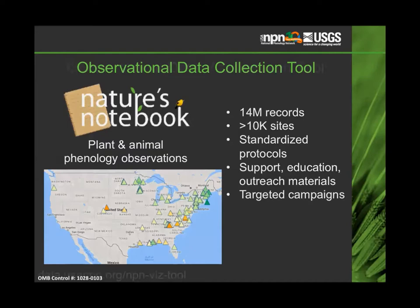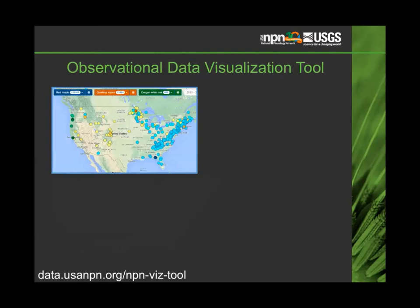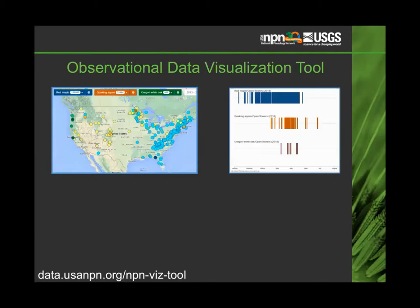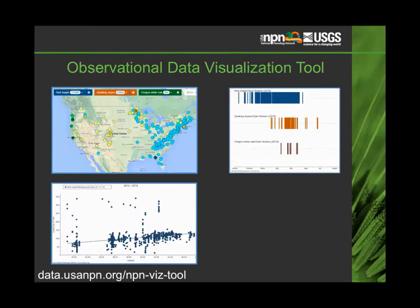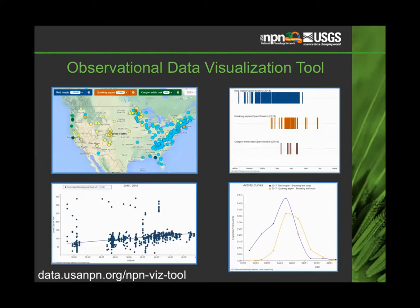We also have a visualization tool which allows you to explore the phenology data collected on the ground — you can look at where data is available at different sites. There are phenology calendars which allow you to look at when people saw open flowers for different species in a given year, a graphing tool that allows you to compare the onset of leafing with latitude or temperature, and activity curves that allow you to compare phenophases — for example, are maples leafing out sooner than oaks or aspens?